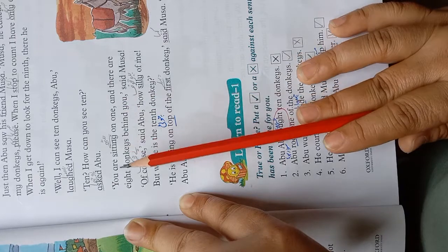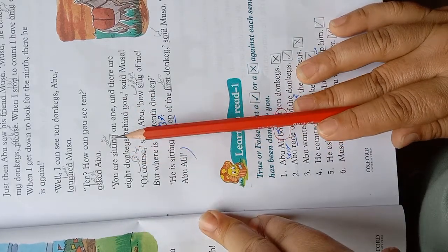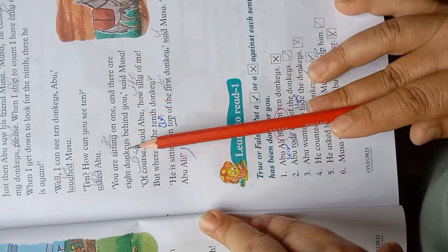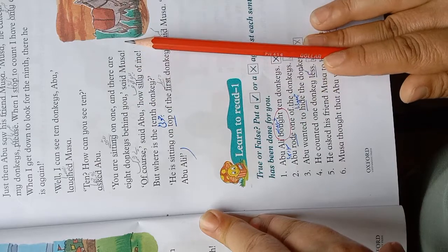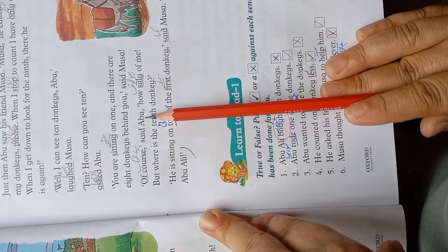You are sitting on one. Tum ek gadde par baithe ho. Sitting ka meaning hota hai baithna. And there are eight donkeys behind you. Aur yahan aath gadde aapke piche hain. Said Musa.